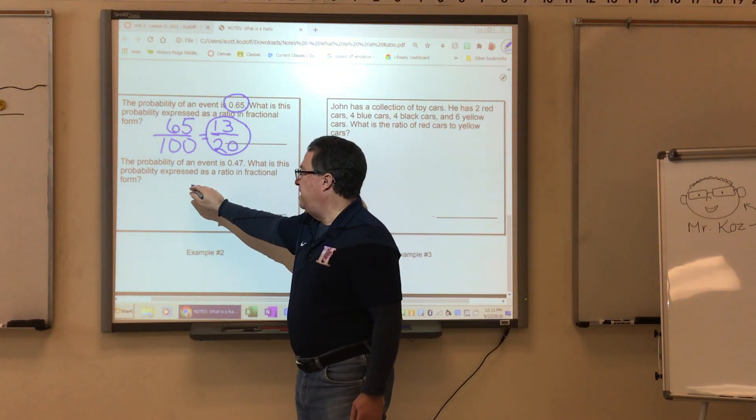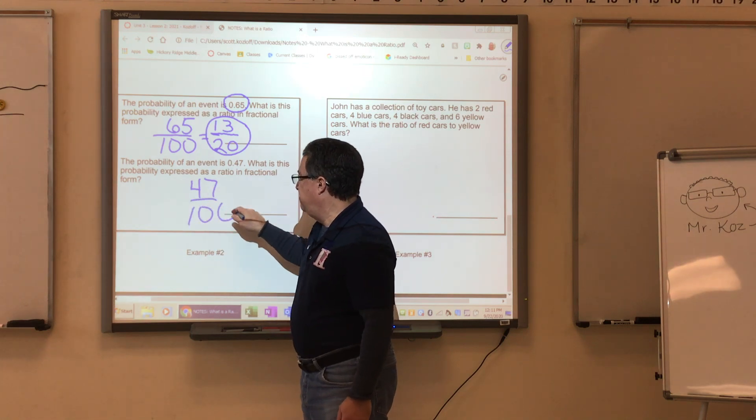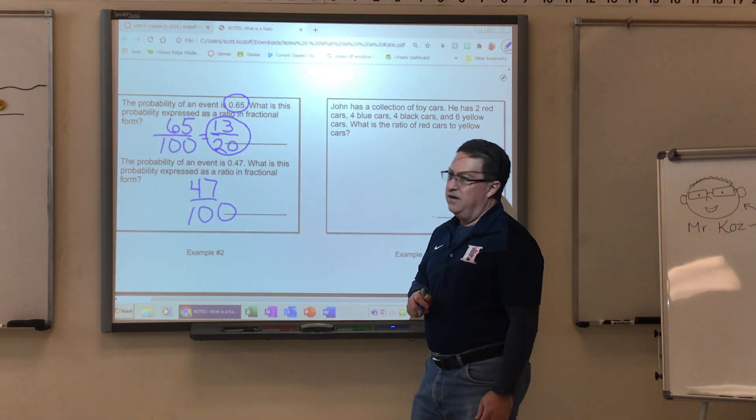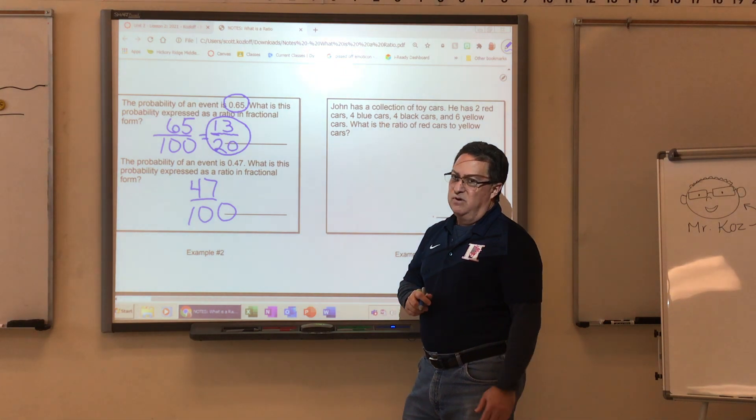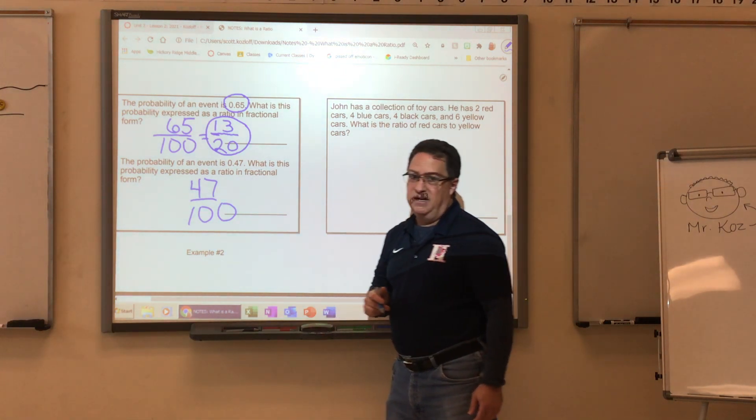If an event is 47 hundredths, this is what it would look like as a ratio. And there is no number that can go into 47. So there is my final answer.